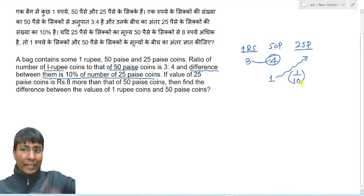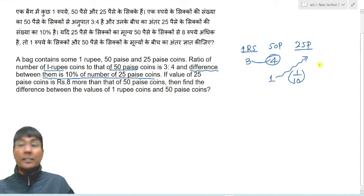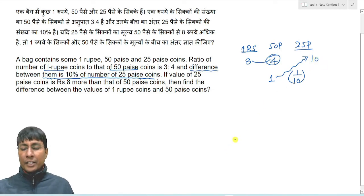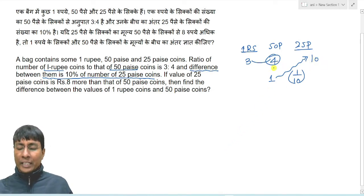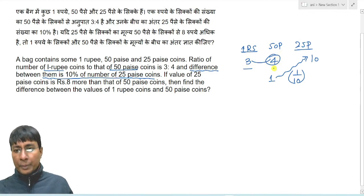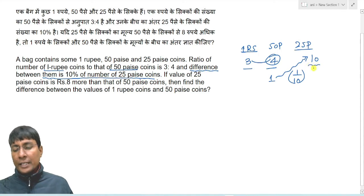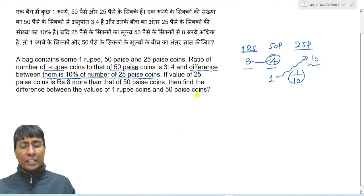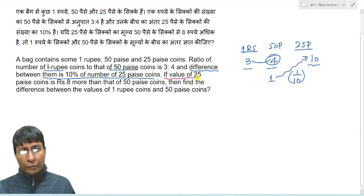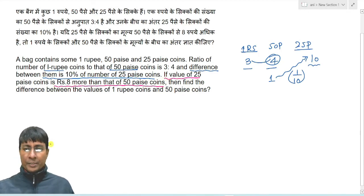One-tenth of the total is indirectly the number of 25 paise coins. So one rupee coin is 3, 50 paise coin is 4, and 25 paise coin is 10. One more piece of information: the value of 25 paise coins is more than that of 50 paise coins.